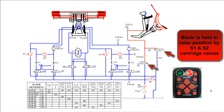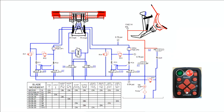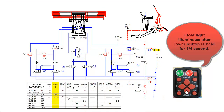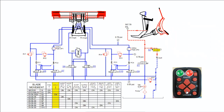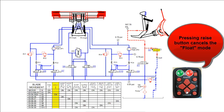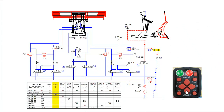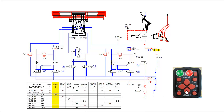We will now perform the lower function. We begin by activating the lower button on the snowplow control. This shifts the S2 cartridge and allows the weight of the snowplow to collapse the lift ram, forcing hydraulic fluid through the shifted S2 cartridge, past the quill, and back to tank. Note that by adjusting the quill inward, you will slow down the drop rate of the snowplow.